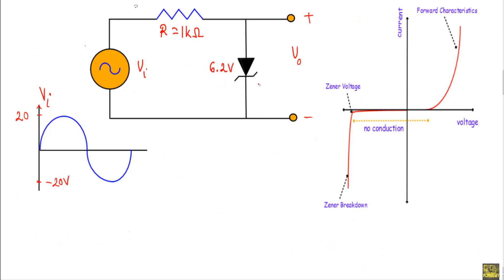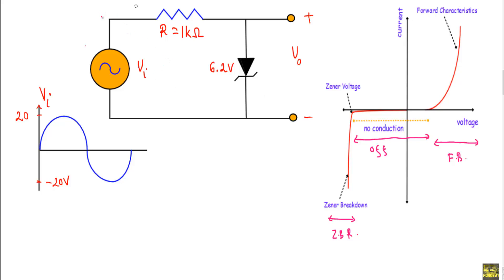From the I-V characteristics of the zener diode it is evident that if the applied forward voltage is greater than the built-in potential, the zener diode will be in forward bias. If the applied reverse voltage is greater than Vz, the zener diode will operate in zener breakdown. Between the zener breakdown and the forward bias region there will be a non-conducting or off state.